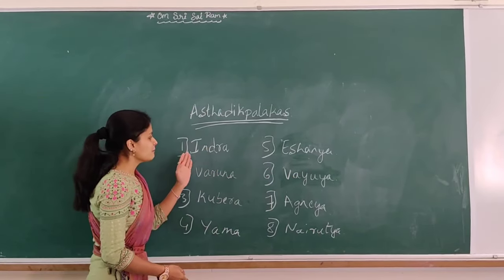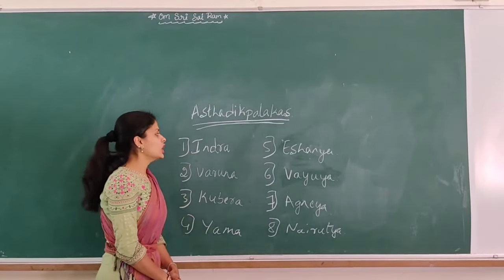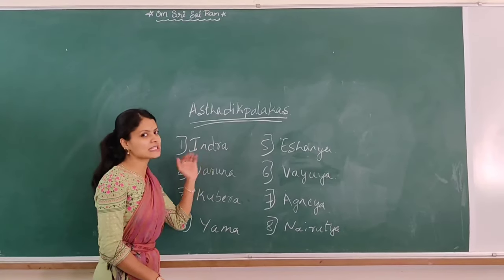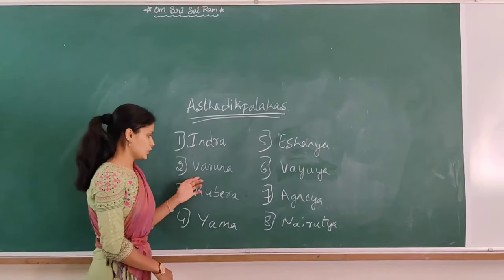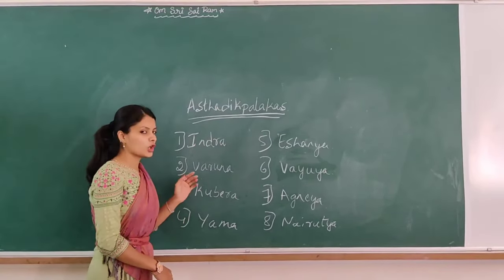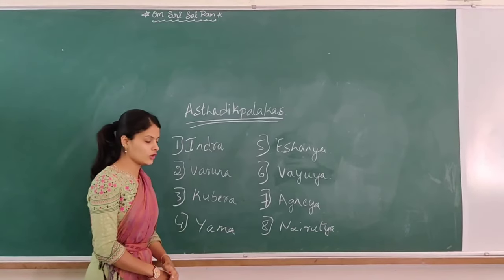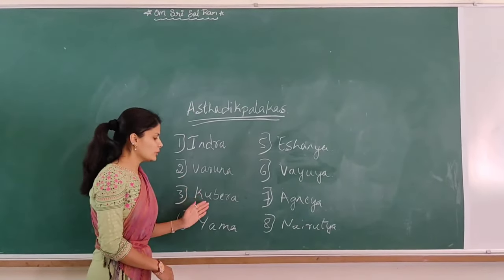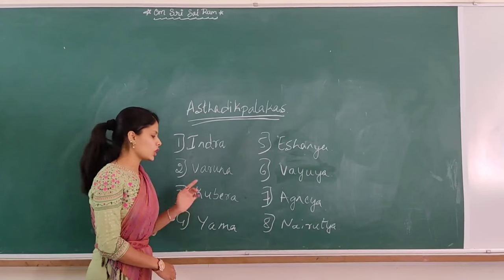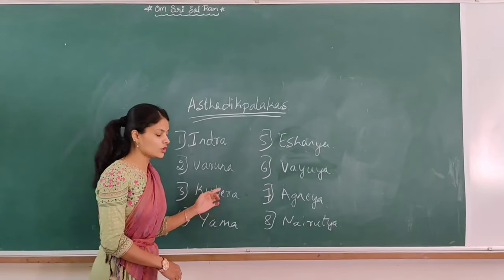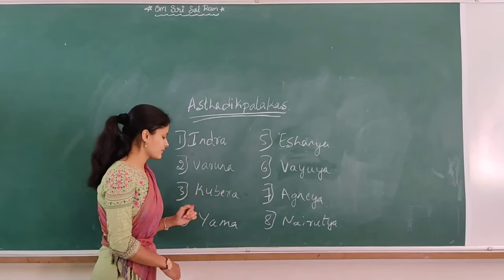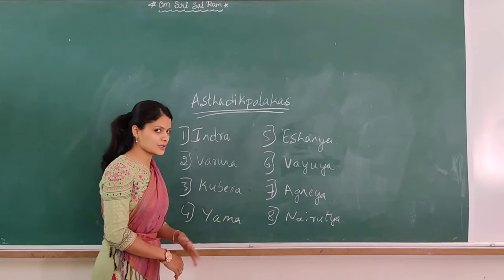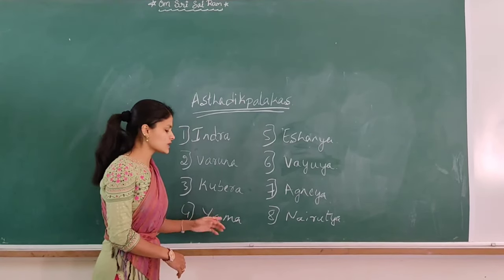Firstly, Indra. Lord Indra is the representation for the East direction. Varuna. Lord Varuna is the representation for the West direction. Kubera. Lord Kubera is the representation for the North direction. Yama. Lord Yama is the representation for the South direction.